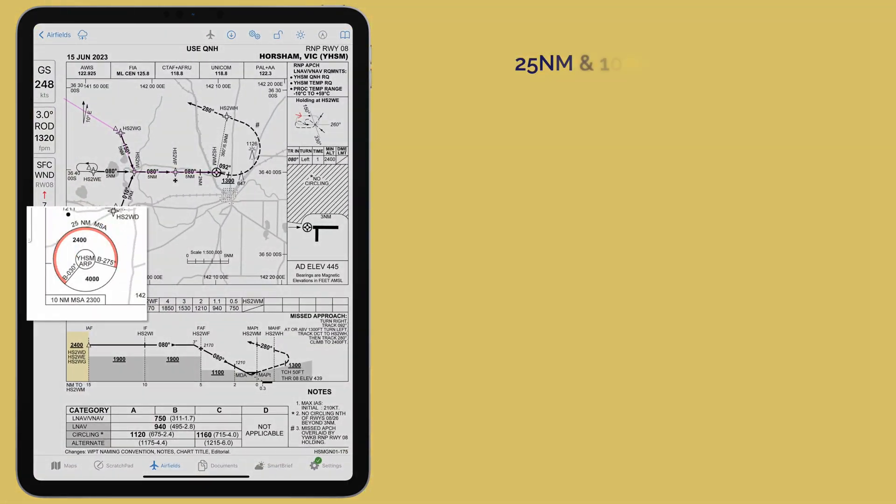Additionally, when you're outside 25 nautical miles, a red arc appears indicating the sector that will become relevant next.